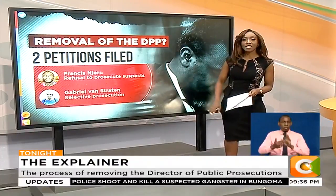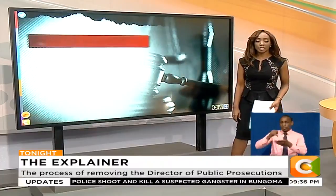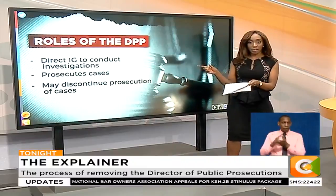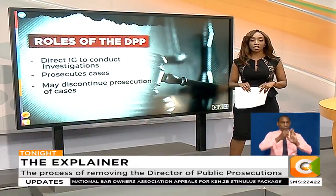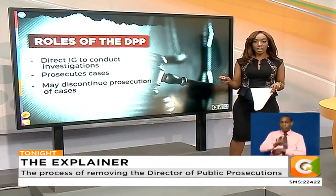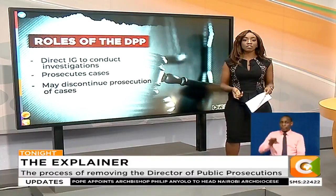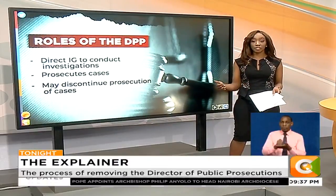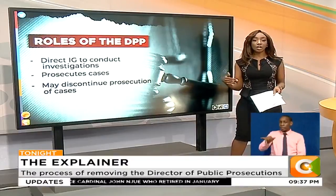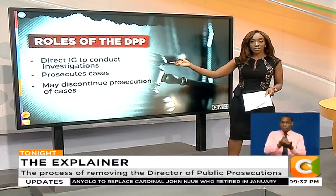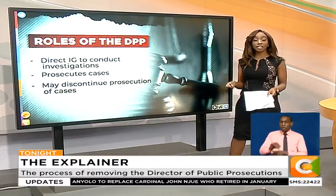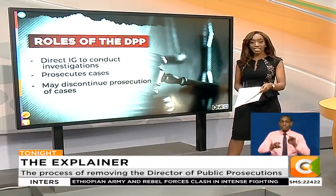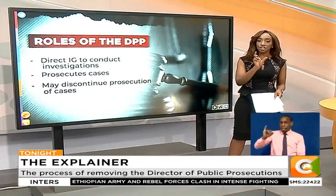Before we get into what happens next and what it would take to remove the Director of Public Prosecutions from office, let's understand the role of this office. It is clearly outlined in the Constitution of Kenya, Article 157. The DPP's nomination is approved by the National Assembly before being appointed by the President, and the holder of this office must have qualifications similar to those of a judge of the High Court.